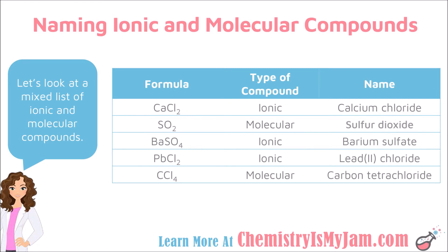In the second example, I ask: is there a metal present? Both sulfur and oxygen are found on the right-hand side of the periodic table, so there is not a metal present. This is a molecular compound, so I use prefixes to name it. The prefix for 1 is mono, but I do not have to put mono for the first element. The prefix for 2 is di, so this becomes sulfur dioxide. It still needs to end in "-ide."